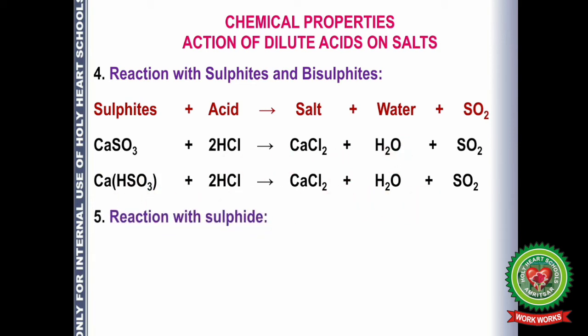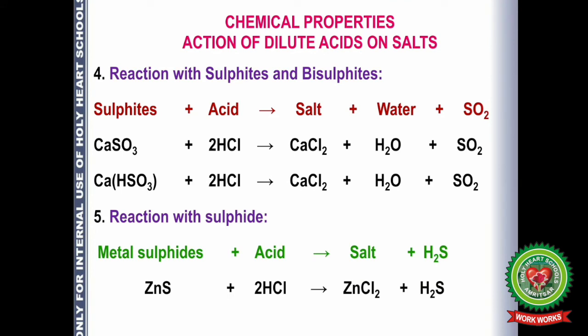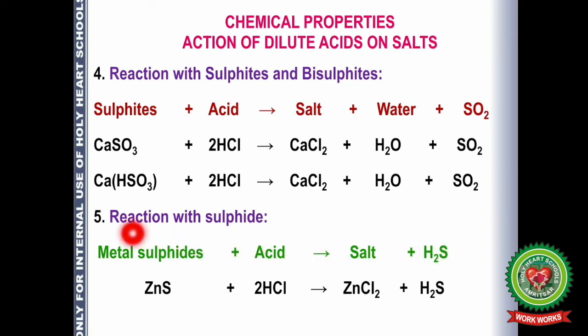The reaction of acids with metal sulfides: sulfide means only sulfur with no oxygen, and the valency is minus 2 (S²⁻). Whenever a sulfide reacts with an acid, it gives H₂S gas, which has a rotten egg-like smell. For example, zinc sulfide reacting with HCl gives zinc chloride and H₂S gas.